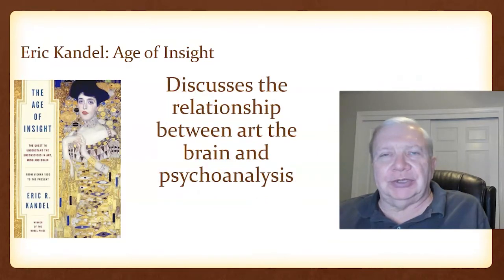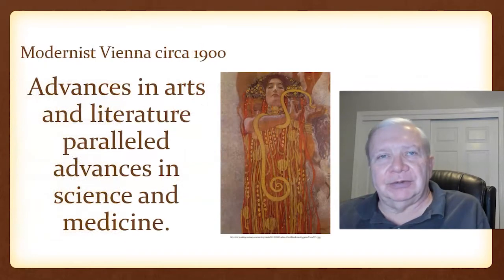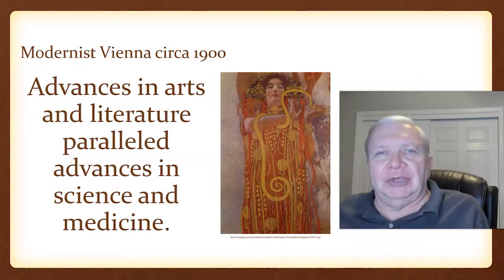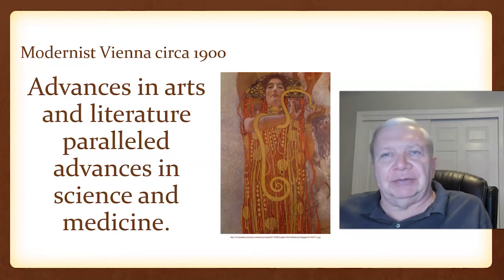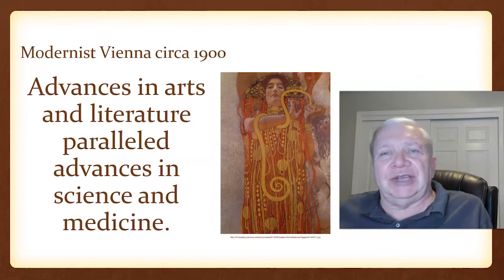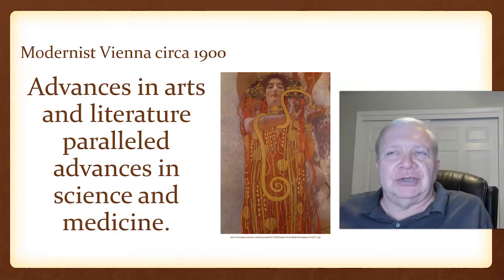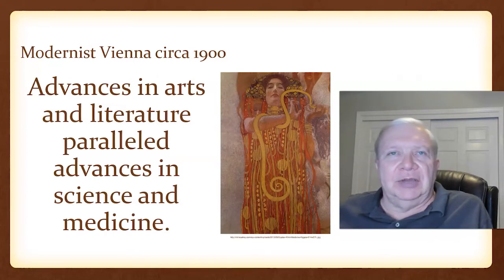One of the things Kandel discusses in this book is the relationship between art, the brain, and psychoanalysis. He makes these statements about Vienna circa 1900. First, there were great advances in the arts and literature that paralleled those in science and medicine. This is one of Klimt's paintings — all of these are Klimt's paintings. This one is of a woman he calls Hygienia, from the Beethoven Frieze, which was in a Viennese medical school. It was thought to be too provocative by conservative administrators and was painted over, though some images still survive.